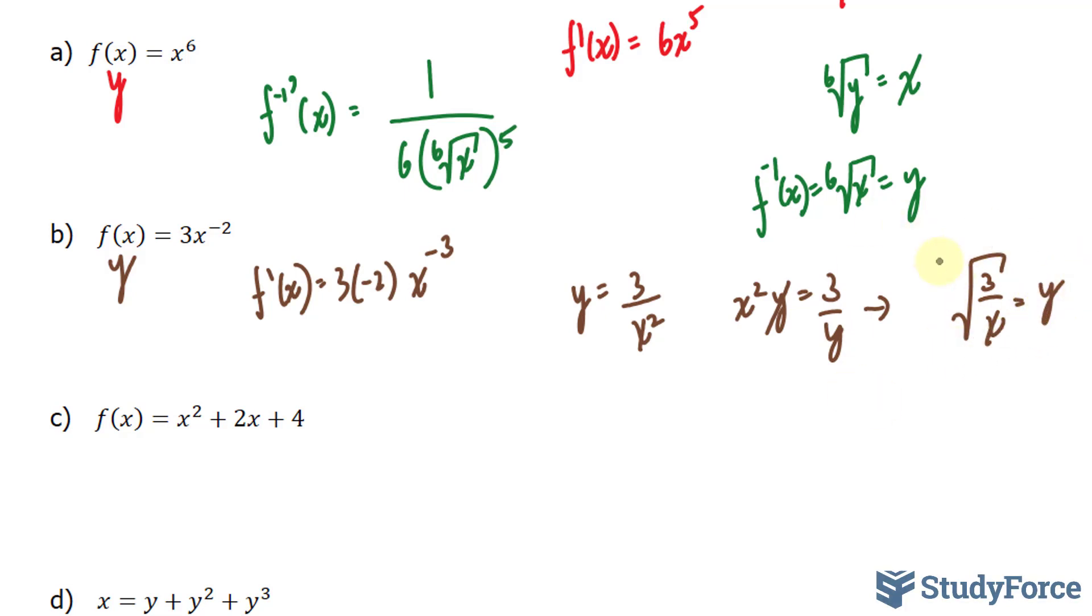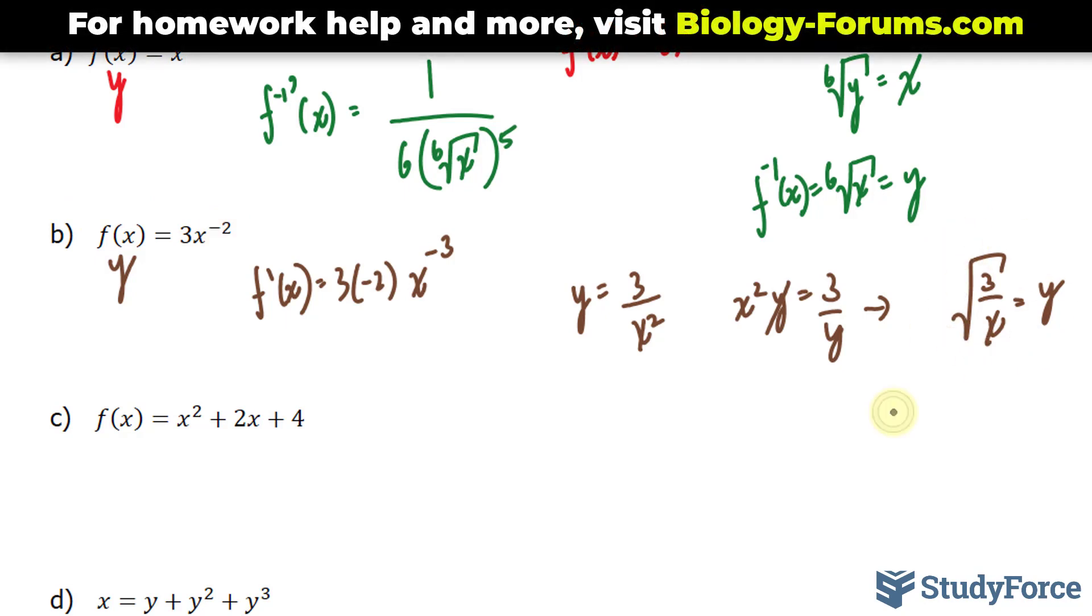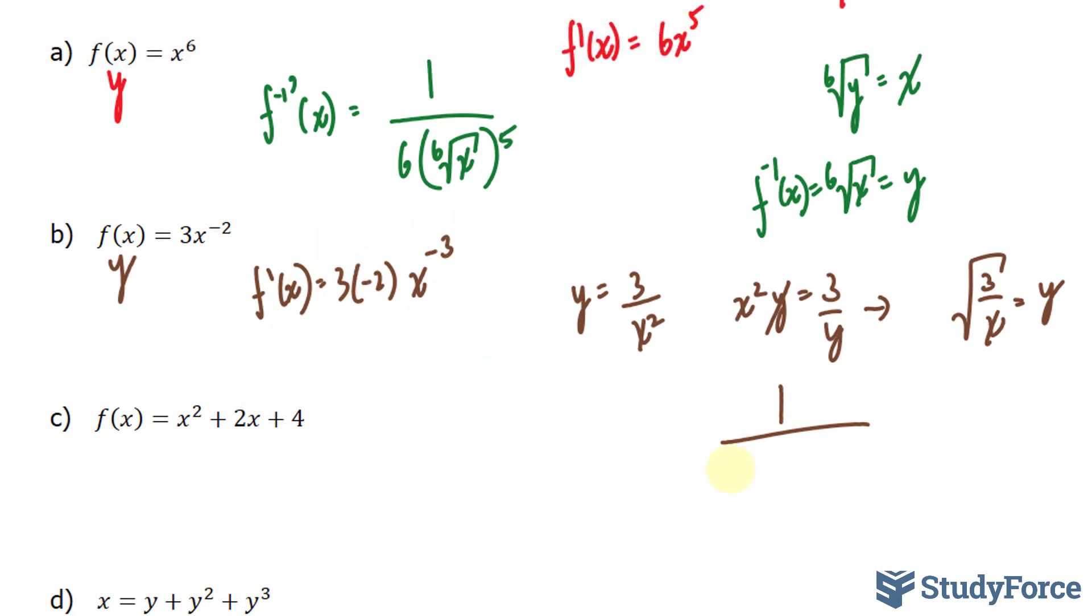This right here is the inverse of our function. And now if I want to find the derivative of this inverse, I'll take 1 over, my derivative was this, that's negative 6, x to the power of negative 3. I'll place that there.